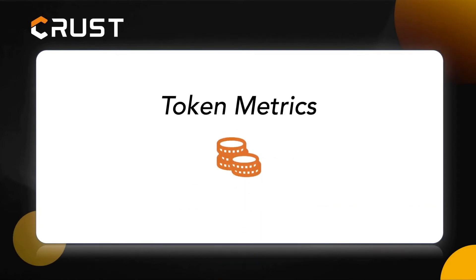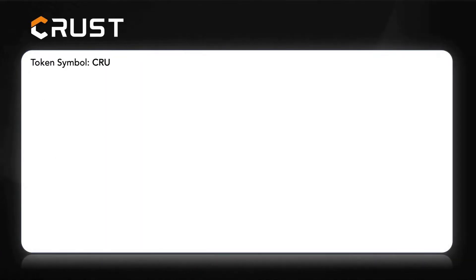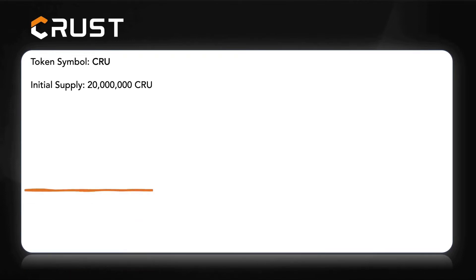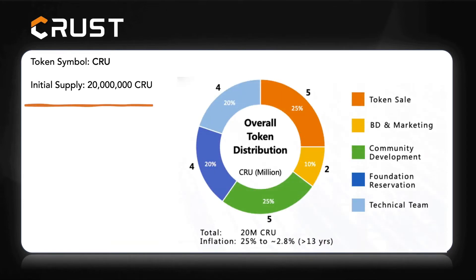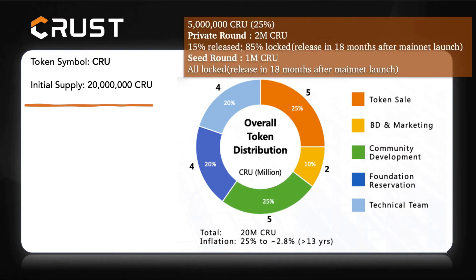The native token of the CRUST network is CRU, and you can find its information on CoinMarketCap. CRU tokens are generated in two ways. One is one-time generation when the main network starts. The other is with the generation of blocks. The initial supply is 20 million. This is the distribution of the first 20 million tokens. 15% of the sold tokens in the private round are circulable at TGE, and the remaining 85% will be linearly unlocked in 18 months after the mainnet.